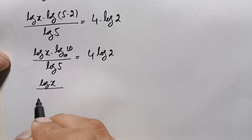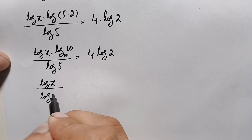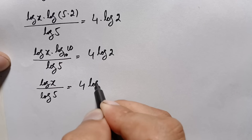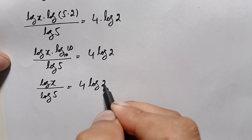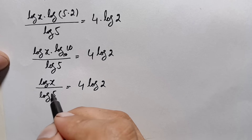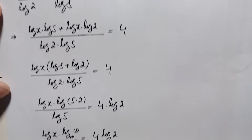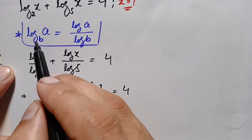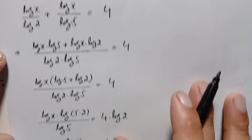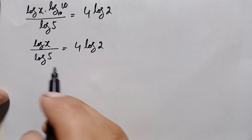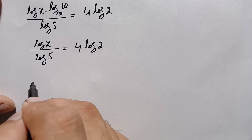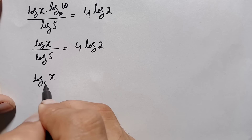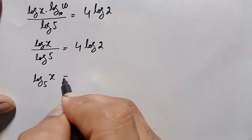So this becomes: log of x divided by log of 5 is equal to 4 times log of 2. Using the change of base identity again, the left hand side becomes log of x with base 5 is equal to 4 times log of 2.